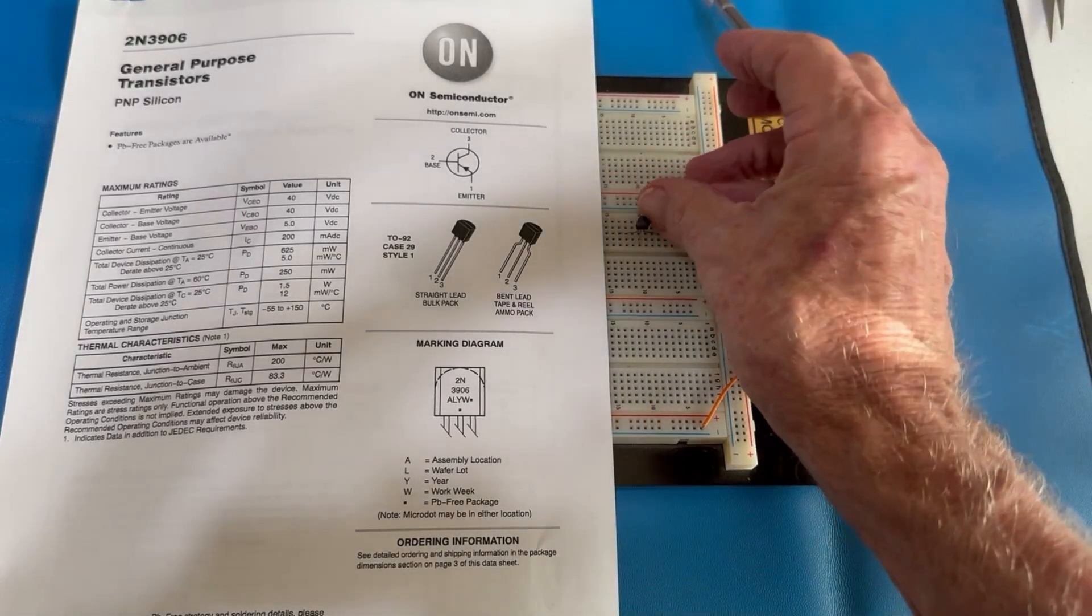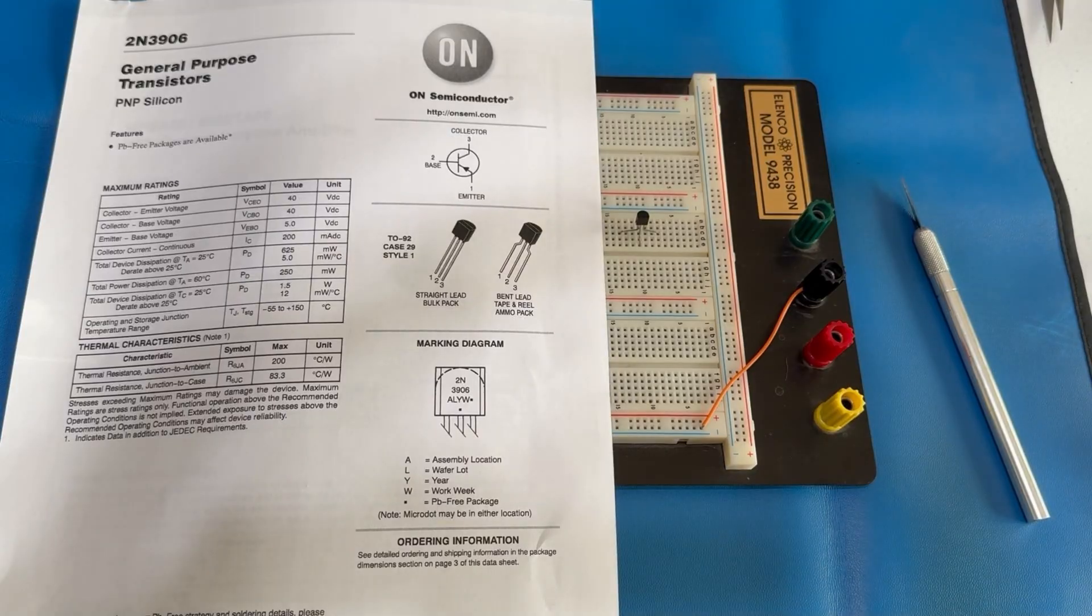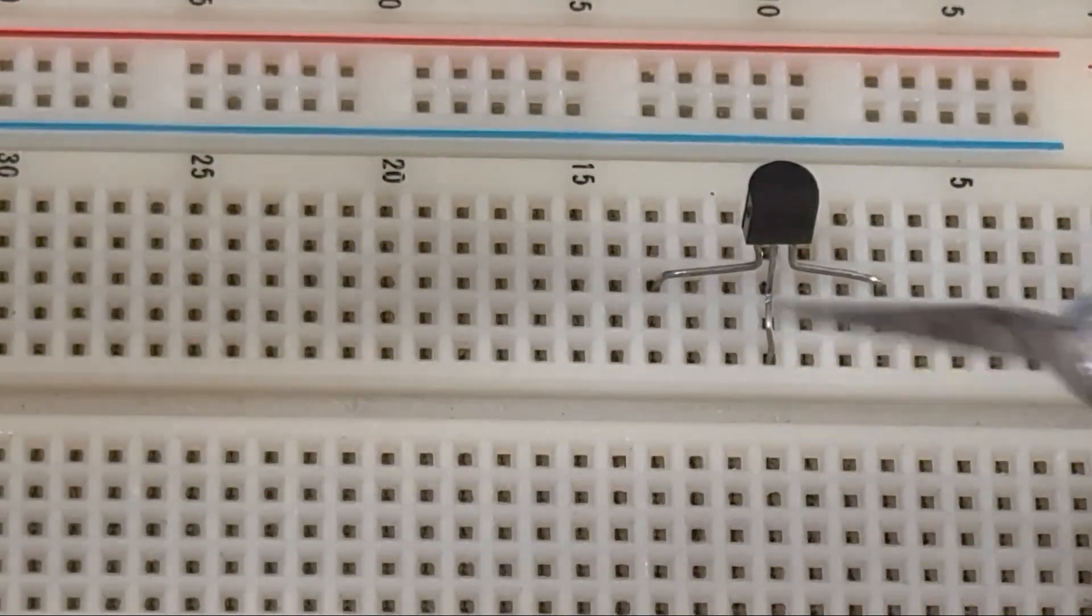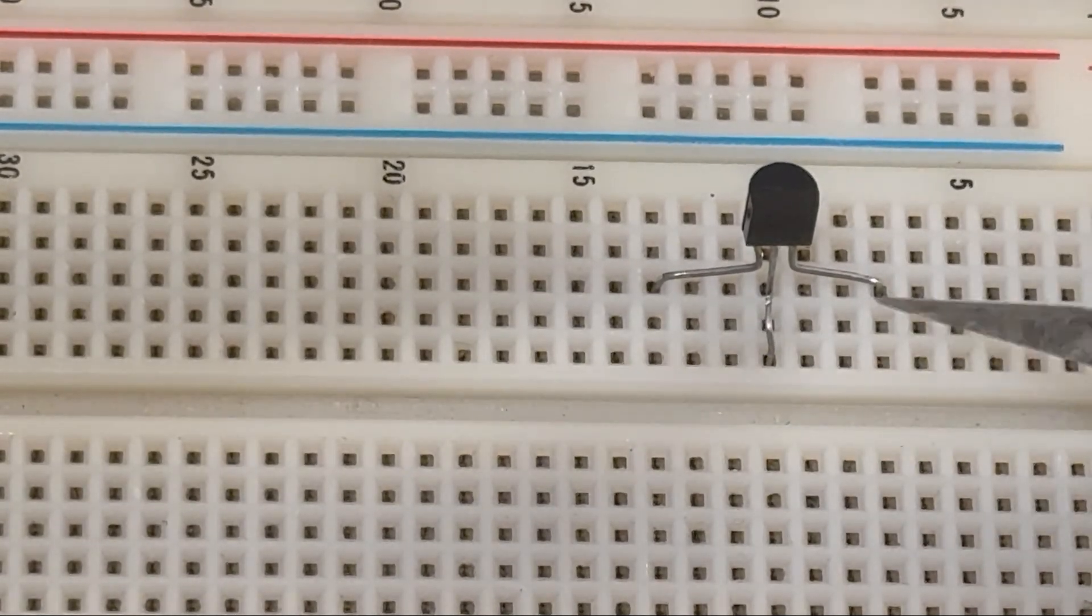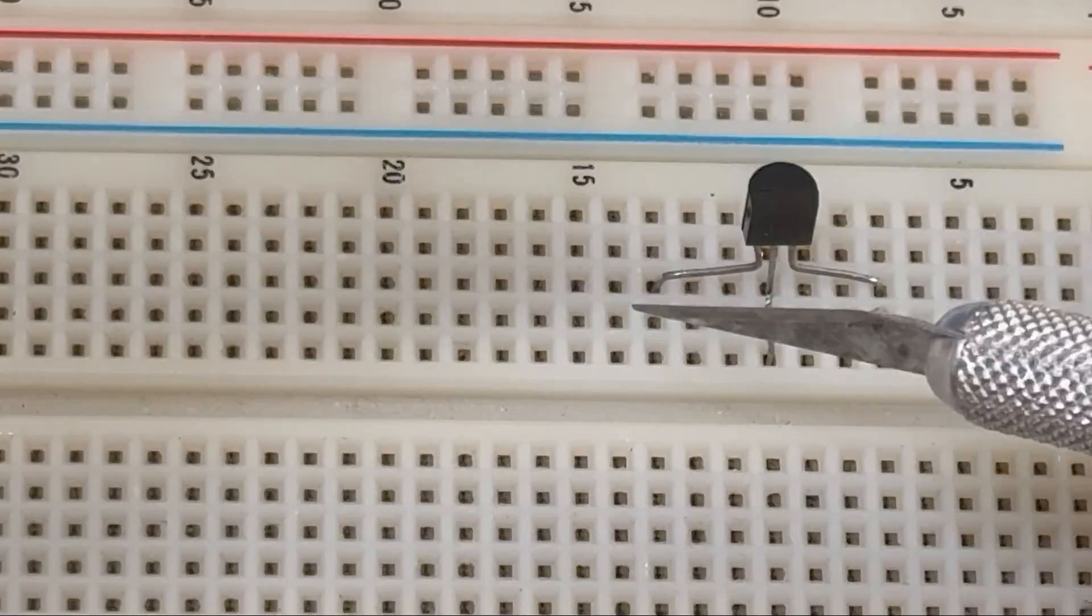Here is our 2N3906. Okay, this is pin 1, that's the emitter. The base, collector. Here is the flat side right here, and you know that the emitter is to the left.